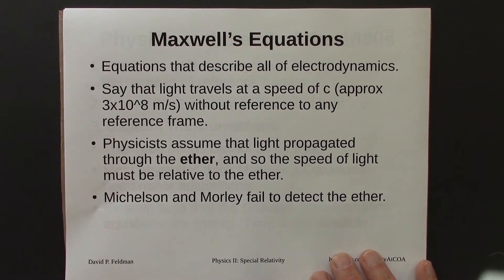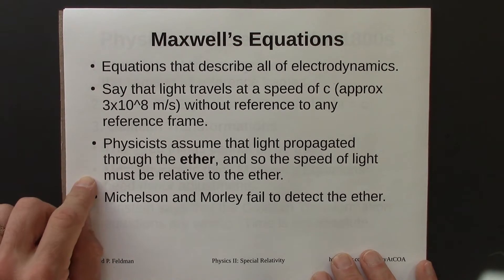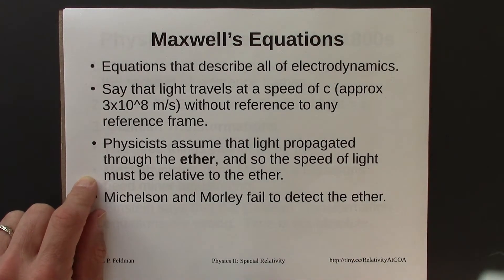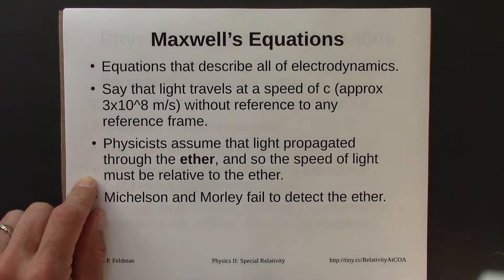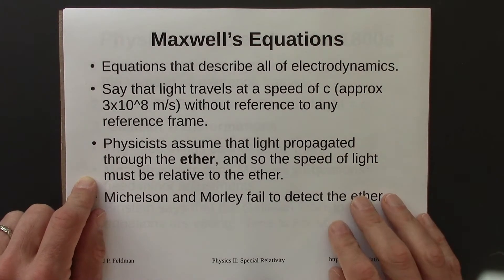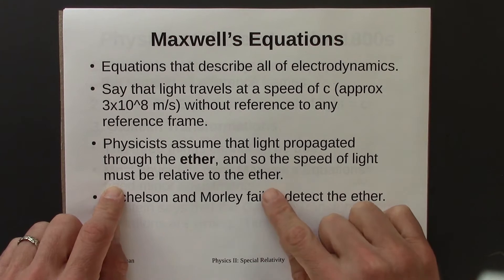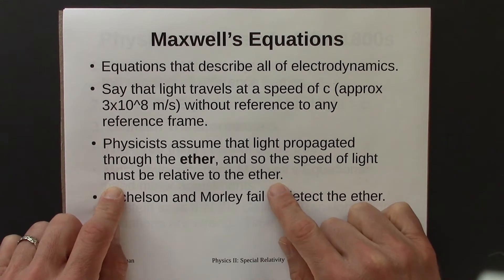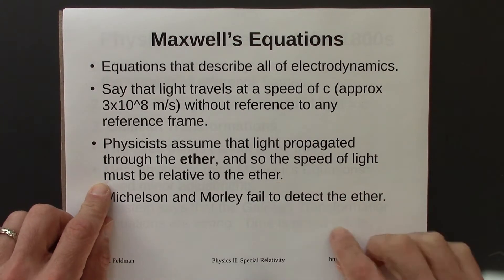Physicists at the time assumed that light propagated through the ether — this colorless, non-reactive medium, which is the thing that wiggled when light waves wiggled. There had to be something that carried the light waves. So the speed of light must be relative to the ether, just like the speed of sound would be relative to air.